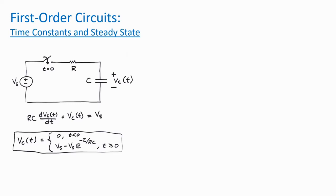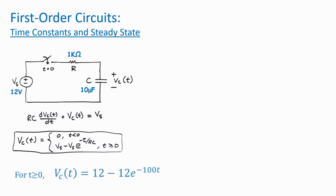Let's start with the RC circuit covered in the last talk and assign specific values to the components. Let's assign 12 volts to the source, 1k ohm for the resistor, and 10 microfarads for the capacitor. Plugging these values into the equation for Vc(t) for t greater than or equal to 0, we get Vc(t) equals 12 minus 12 e to the minus 100t.